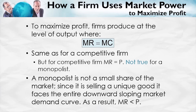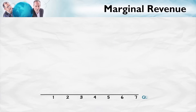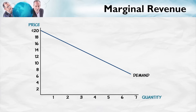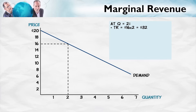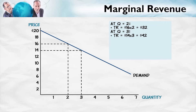Let's calculate marginal revenue for a monopolist. Starting from the demand curve, suppose we're initially selling two units at $16 each. Total revenue is $16 times two, or $32. Marginal revenue is the change in total revenue from selling one additional unit. If we sell three units, the price must fall to $14. Total revenue becomes $14 times three, or $42. Therefore, marginal revenue — the change in revenue from selling that additional unit — is $10.